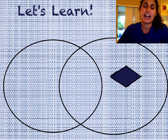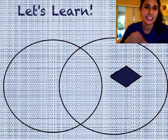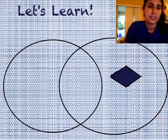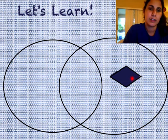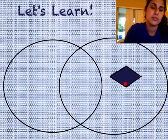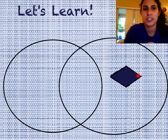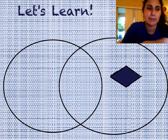Let's learn. I started out with this rhombus over here because I'm thinking that that's going to be a good starting point for us. I have a rhombus over here that has two obtuse angles and it has two acute angles. So let's see what other shapes we can sort.